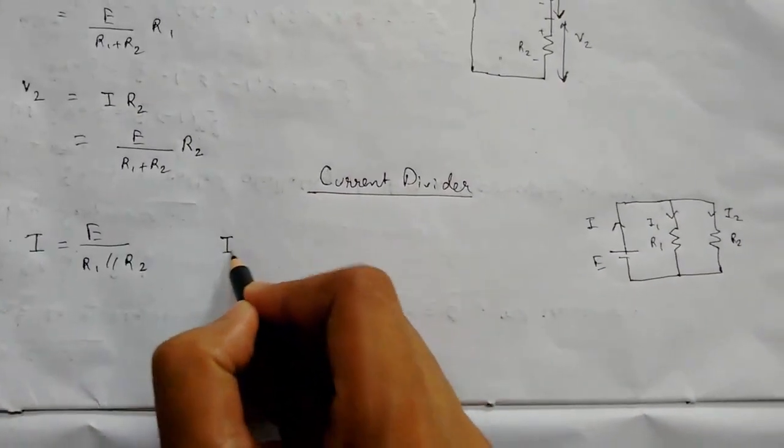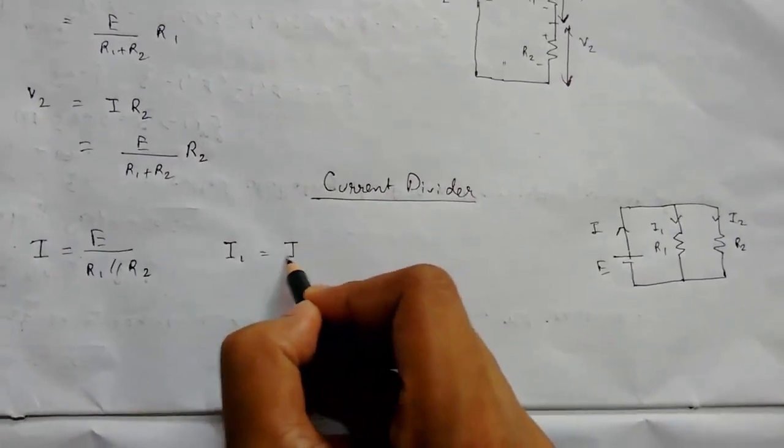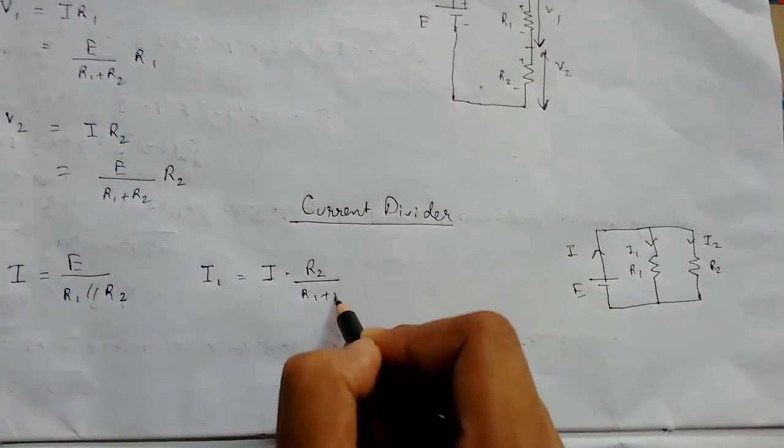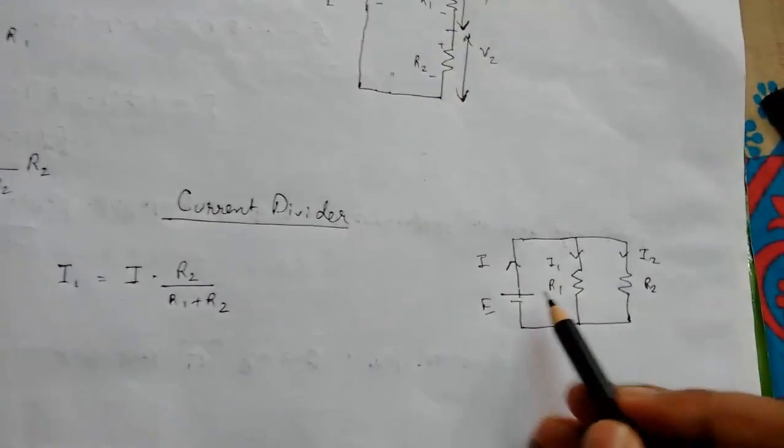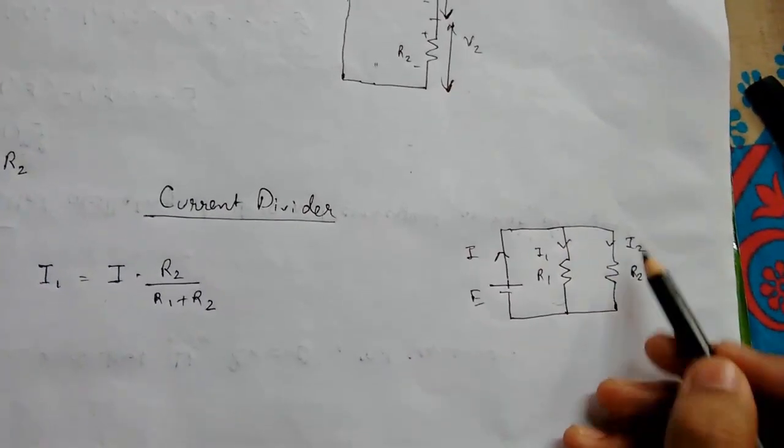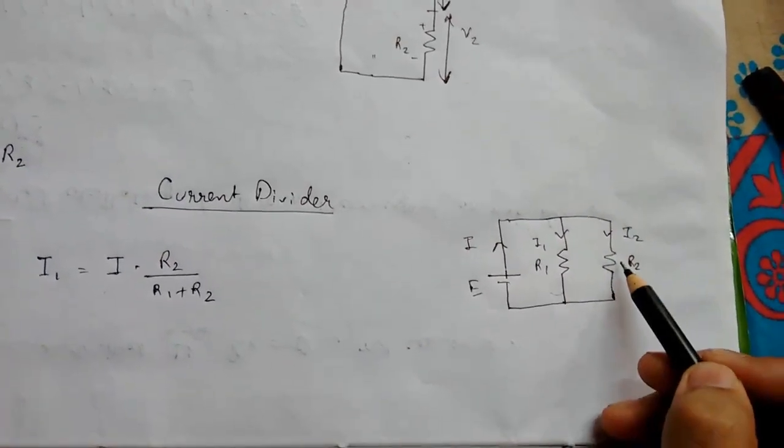So this is the total current. Now to calculate current passing through the R1 resistance, the formula is I1 equals total current into R2 upon R1 plus R2. To calculate the current in the first branch, we need to take the resistance of the other branches.